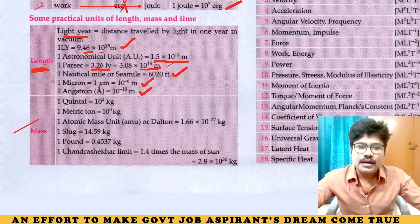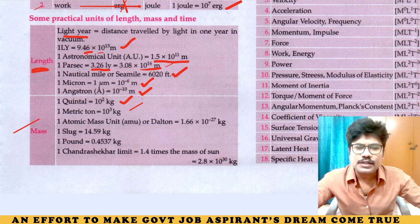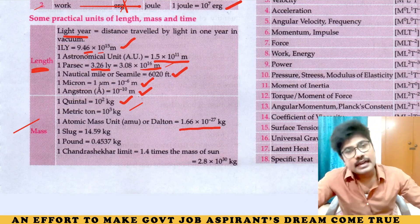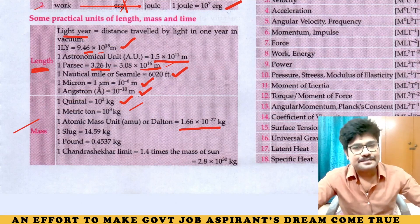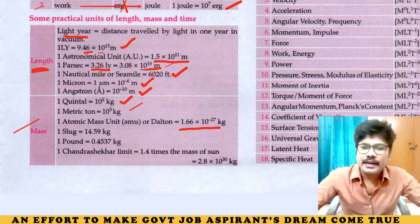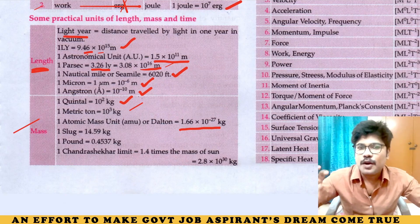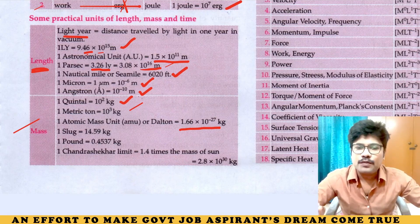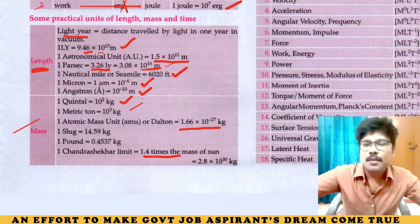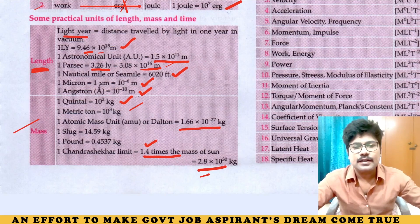Next, mass units. 1 quintal equals 100 kg. 1 metric ton equals 1000 kg. Atomic mass unit or dalton equals 1.66 into 10 to the power of minus 27 kg. 1 slug equals 14.59 kg. 1 pound — you should remember — 0.4537 kg; at minimum remember 0.45. Chandrashekar limit equals 1.4 times the mass of the Sun, or 2.8 into 10 to the power of 30 kg.